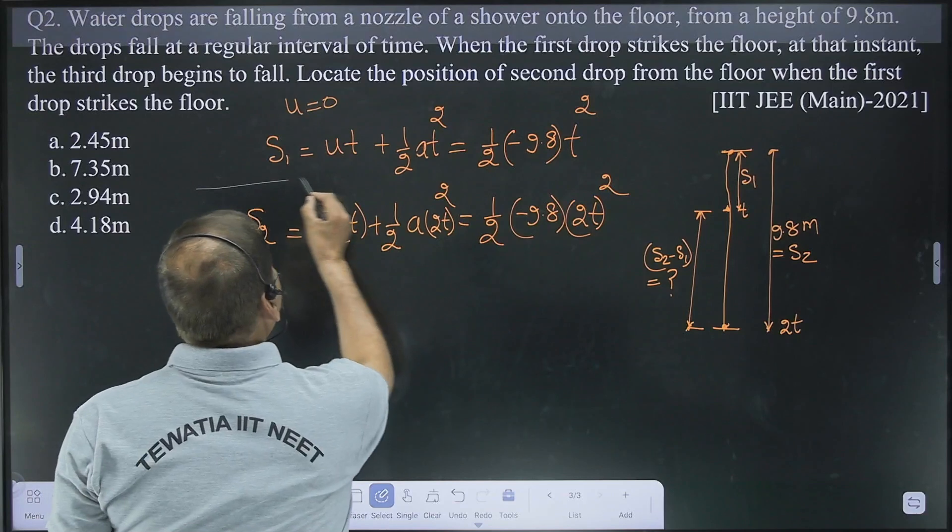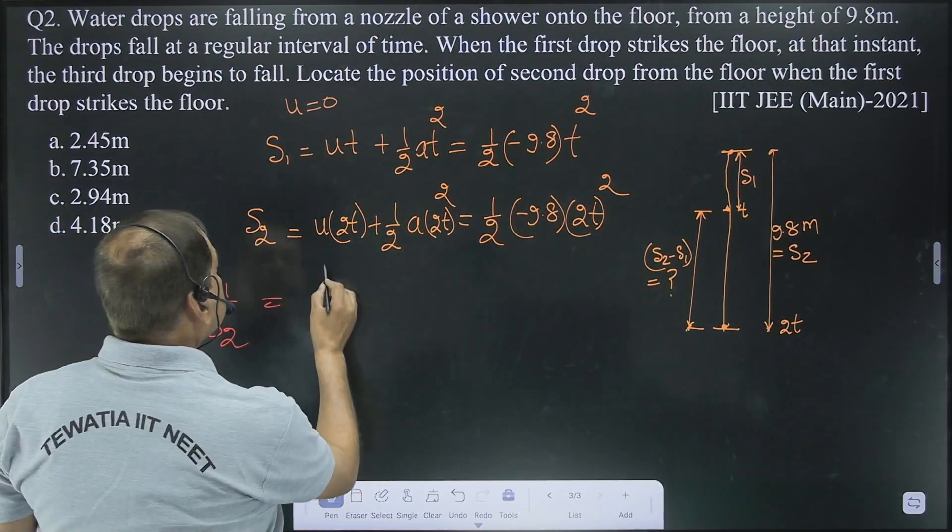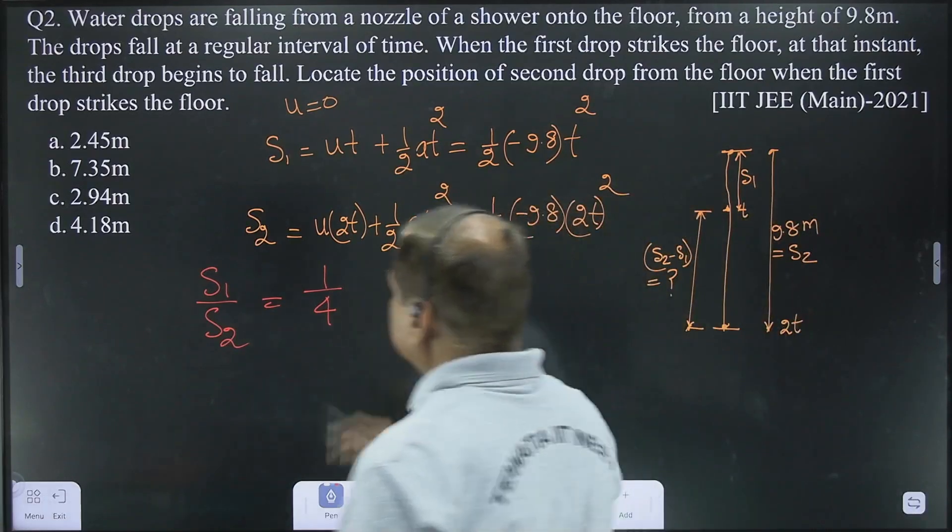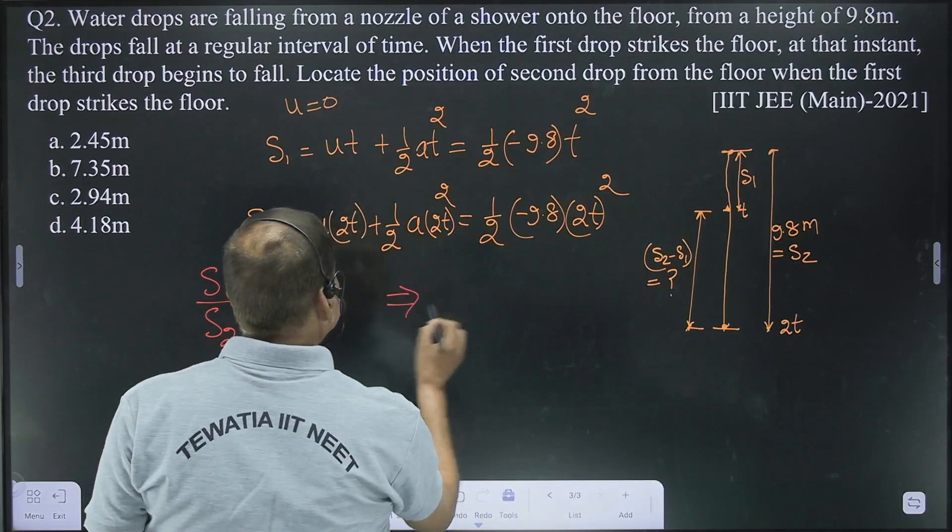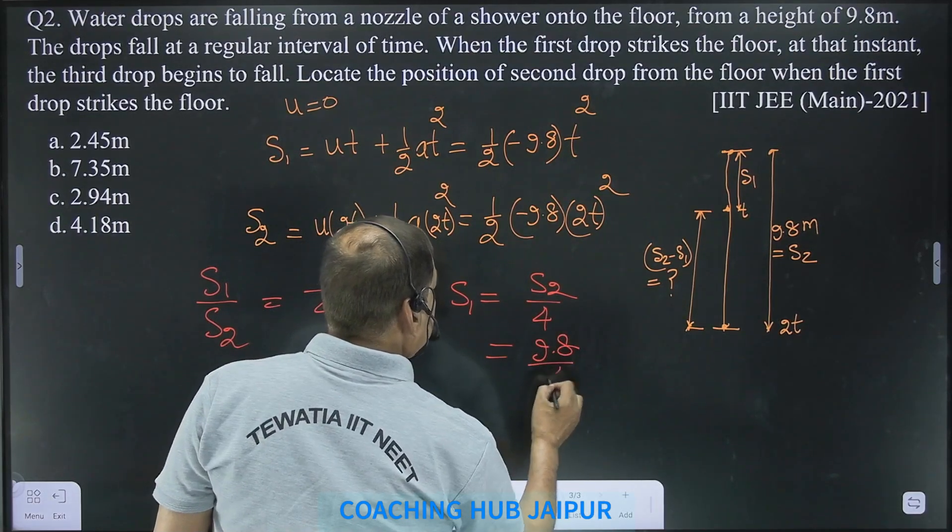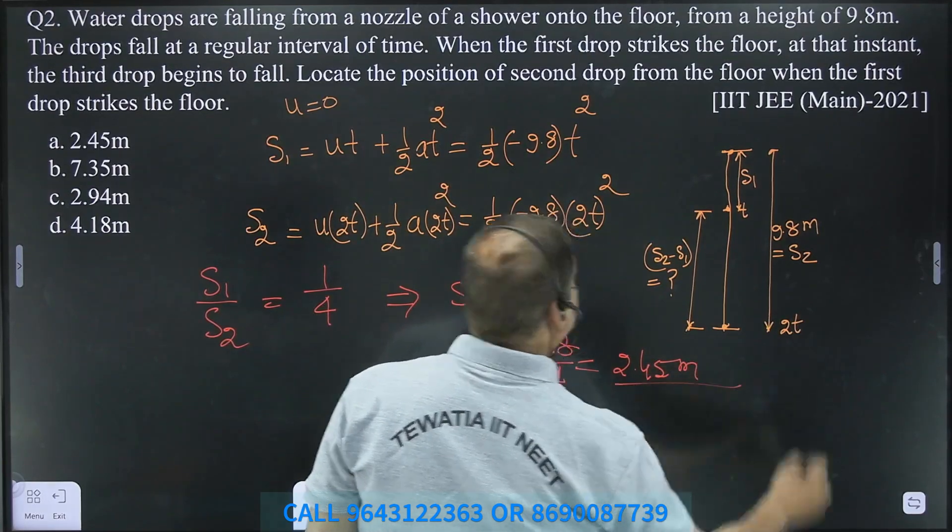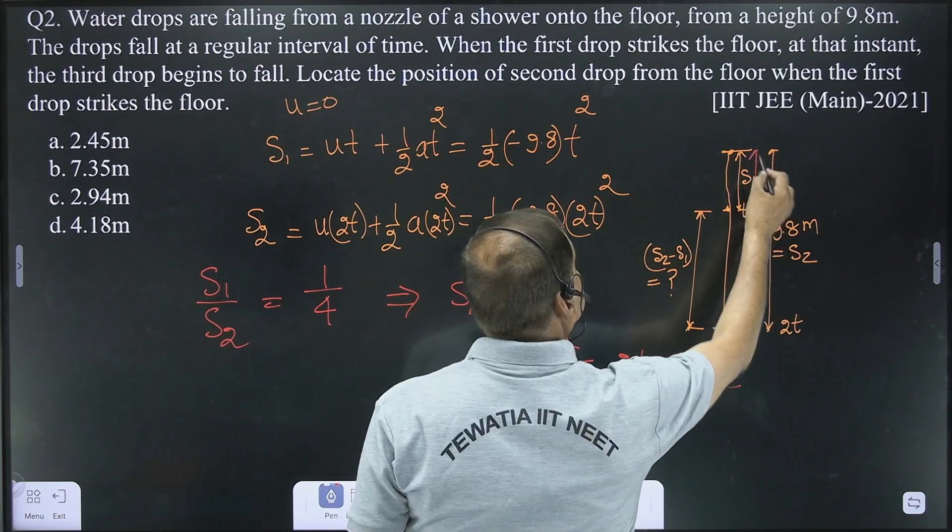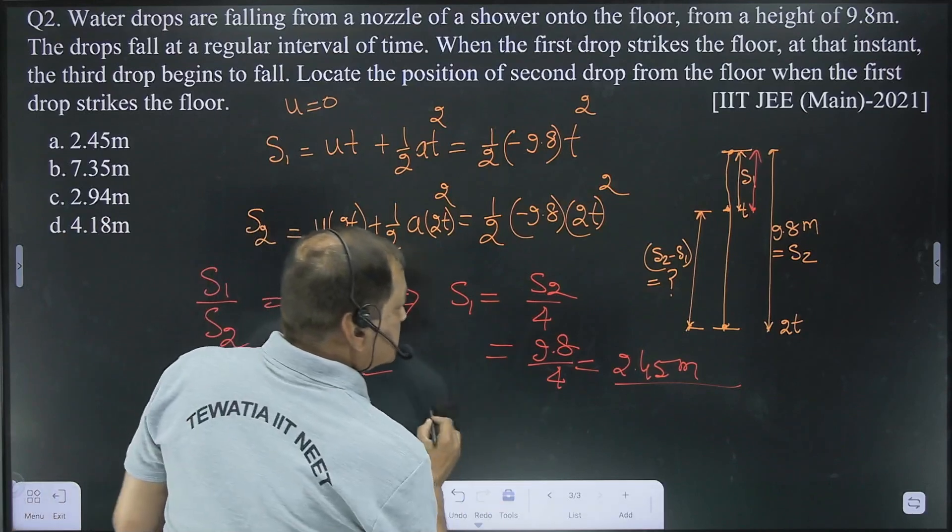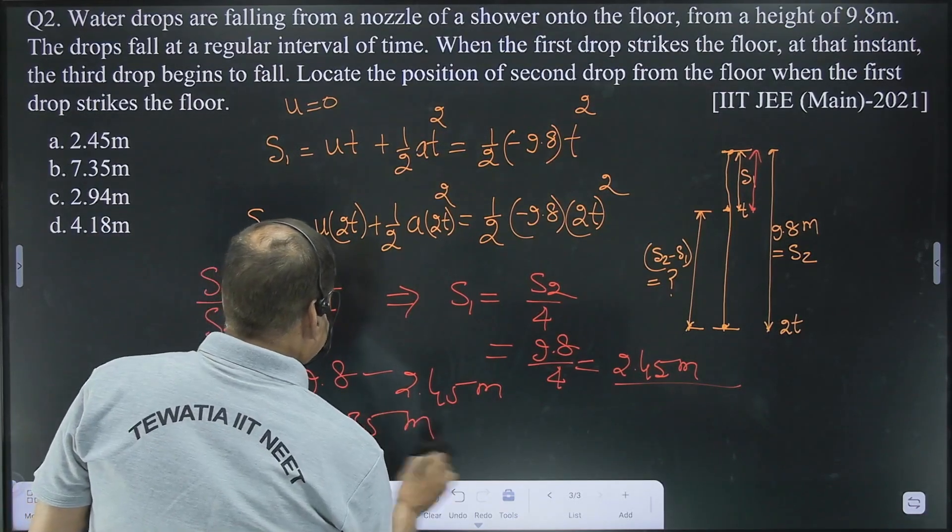Now what we do is simple, divide this. Take S1 by S2. So it becomes 1 by 4, all cancel out. So S1 is S1 by S2, 1 by 4. That means S1 is equal to S2 by 4, 9.8 by 4, so 4.9 by 2, that means 2.45 meter. But this is 2.45 meter. So what will be S2 minus S1? So S2 minus S1 will be 9.8 minus 2.45 meter, 7.35 meter. So this is the answer.